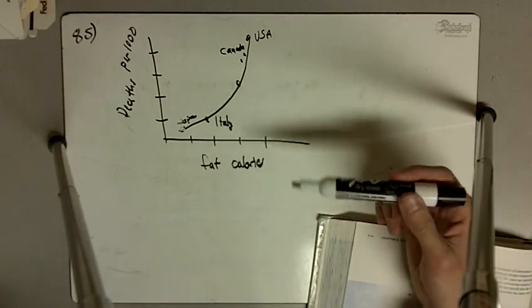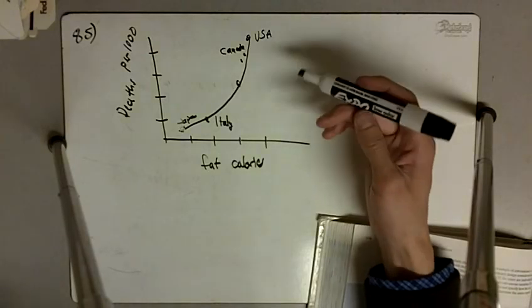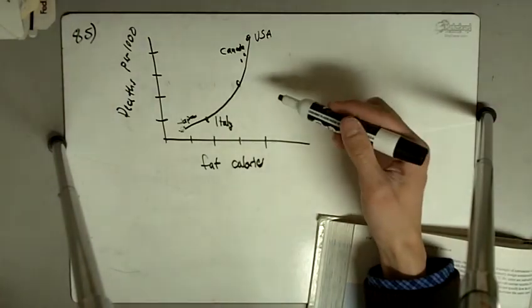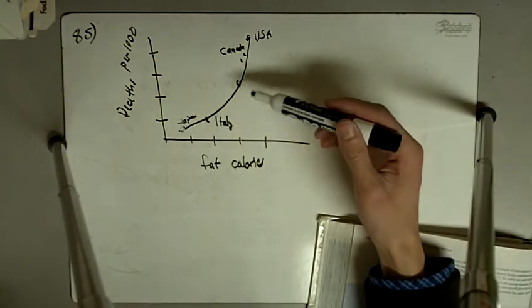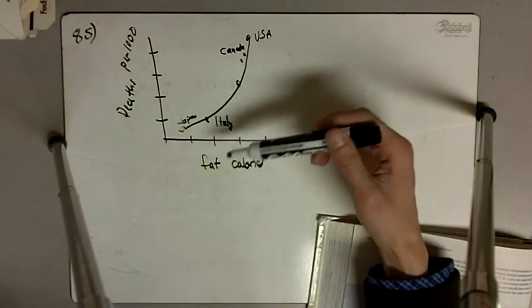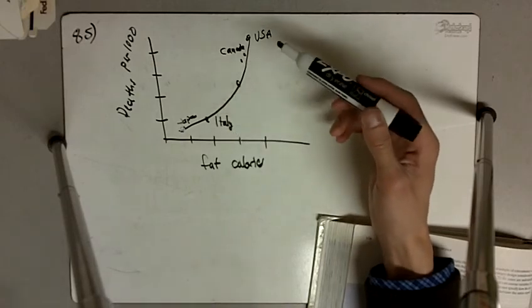It's also possible that maybe the doctors in the U.S. are just more likely to diagnose someone saying they died of degenerative heart disease more frequently than maybe the Japanese doctors. It's possible that the Japanese and Italian doctors are more likely to say the cause of death was something else other than degenerative heart disease.